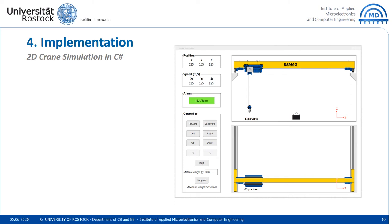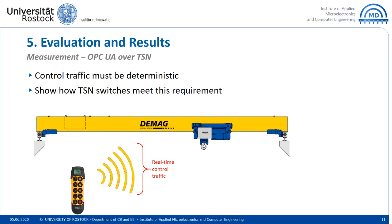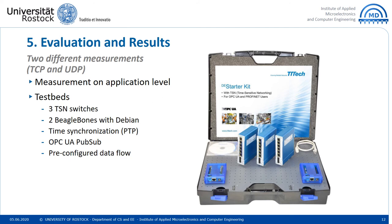The screenshot of the simulation shows the movement of the crane from side view and top view. Mostly OPC UA is used to configure, monitor, and collect data and state information of an industrial system. To use OPC UA for a system control task, deterministic transmission of control packets is required. This can be achieved by combining OPC UA and TSN, also known as OPC UA over TSN. We wanted to evaluate how TSN switches meet real-time requirements when OPC UA is used. We used the TTTech TSN Starter Kit and made both TCP and UDP measurements at the application level; here we only present the UDP results.